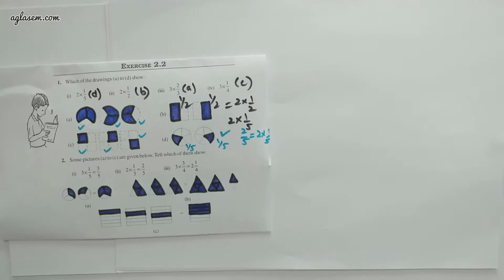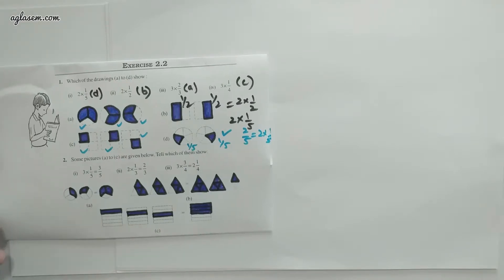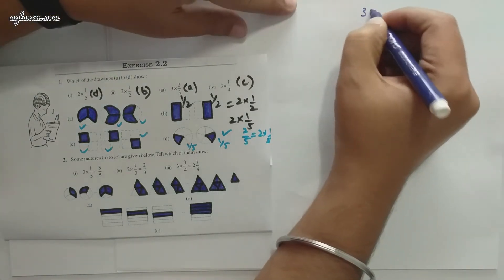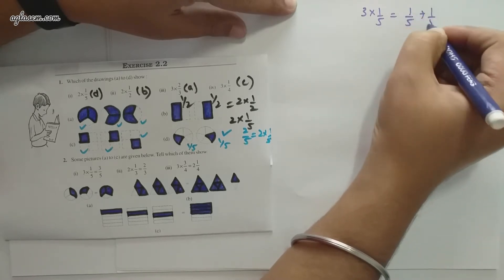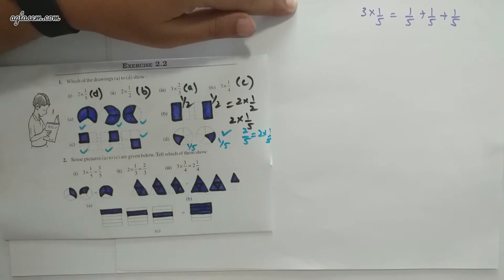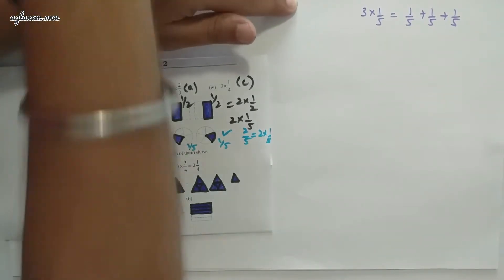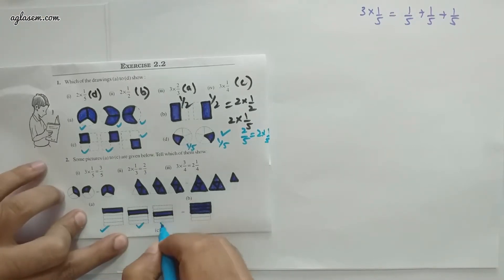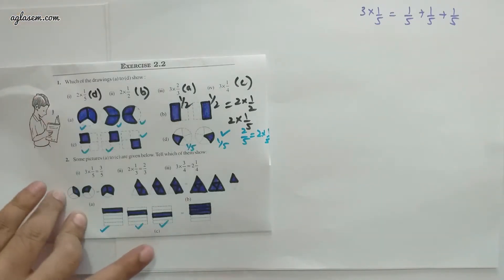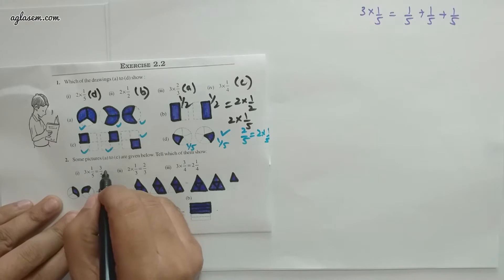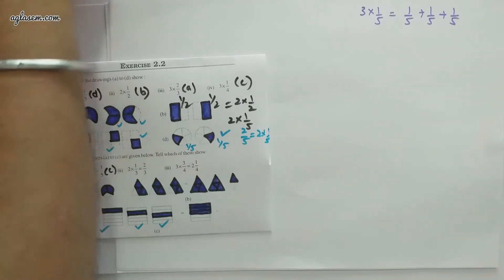Moving on to question number 2: pictures a to c are given. Tell which of them shows (i) 3×(1/5) = 3/5, (ii) 2×(1/3) = 2/3, (iii) 3×(3/4) = 2¼. For part 1, 3×(1/5) means 1/5 + 1/5 + 1/5. Looking at the figures, figure c shows 1/5, 1/5, 1/5, which equals 3/5. So the answer to part 1 is c.